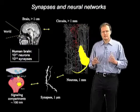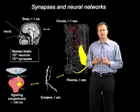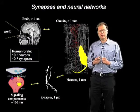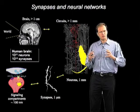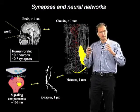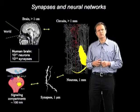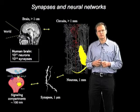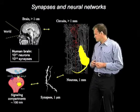The neocortex is the largest part of the mammalian brain, and it's really a complex network made out of many neurons, connected into complex networks by synapses.